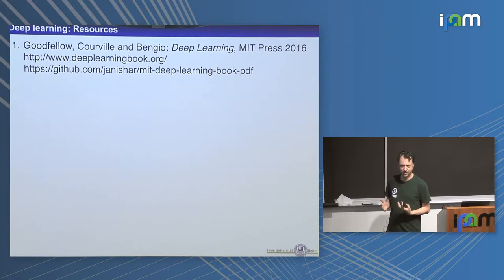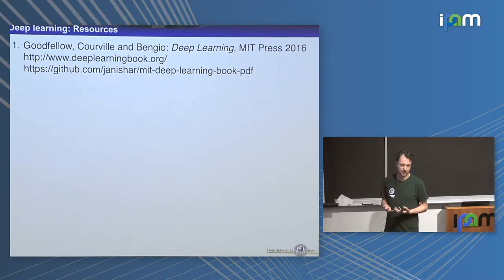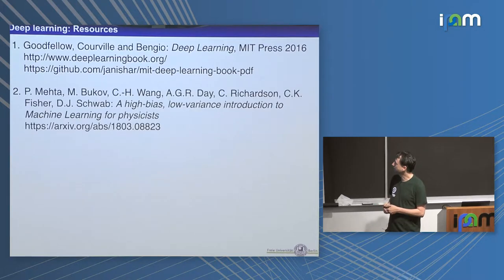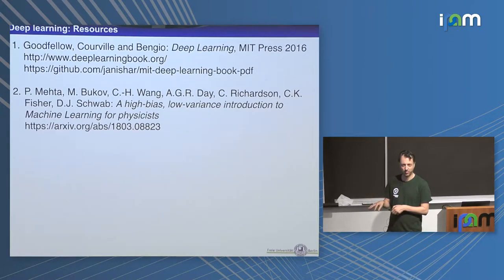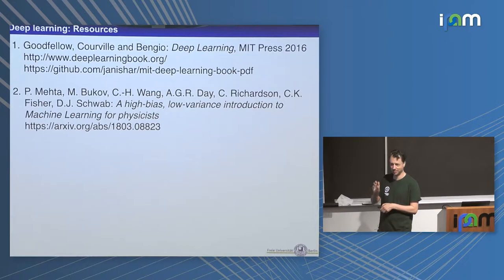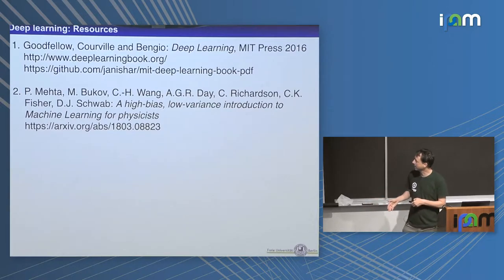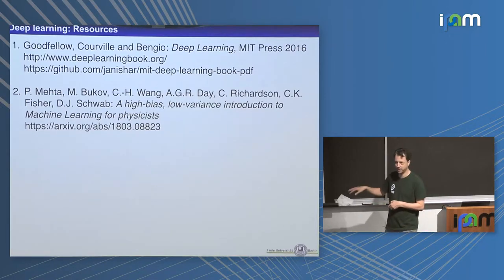Some resources: if you haven't done deep learning yet, this is a good book to get an overview. It's pretty superficial but covers a lot of topics and the PDFs are online. There's also an interesting resource for the interface of physics and machine learning — it's mostly not deep learning, but it compares machine learning concepts to physics and derives or expresses them in physics language, which is cool if you have a physics background. All PDFs of the talks will be available on Slack.